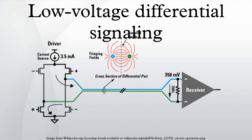Low Voltage Differential Signaling, or LVDS, also known as TIA/EIA-644, is a technical standard that specifies electrical characteristics of a differential serial communications protocol.